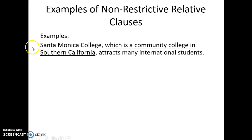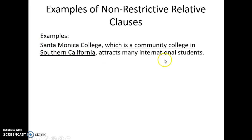So let's look at a couple of examples. The first sentence: 'Santa Monica College, which is a community college in Southern California, attracts many international students.' Notice we have commas around this adjective clause. The reason why is that we don't really need this information — we can easily take it out and we're left with 'Santa Monica College attracts many international students.' We don't need this information to identify which Santa Monica College; there's only one Santa Monica College. So it's extra information.